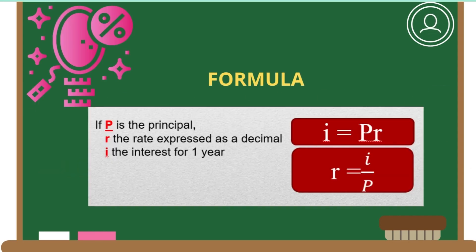Now this is the formula of interest: I = Pr, where P is for the principal, r is the rate expressed as a decimal, and I is the interest for one year.